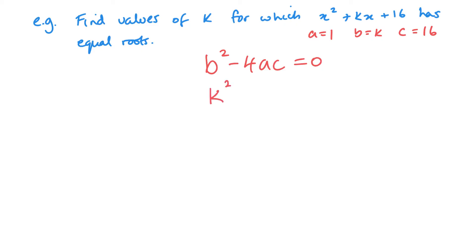So K squared minus 4 lots of 1 lots of 16. So this is K squared minus 64 equals 0. K squared equals 64. K equals plus or minus 8. And that's it done. So K can either be positive 8 or K could be a negative 8.